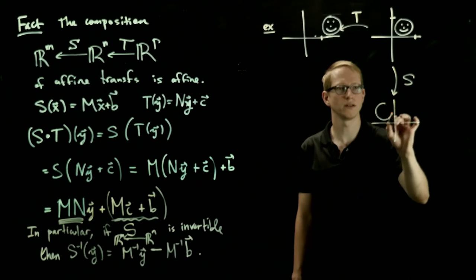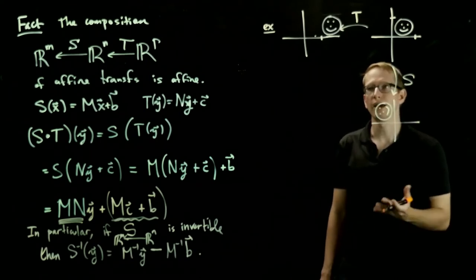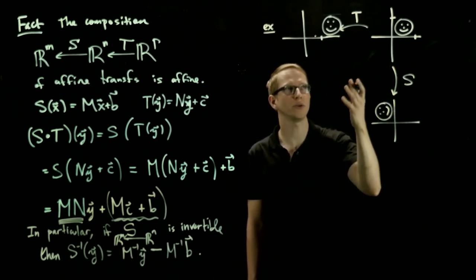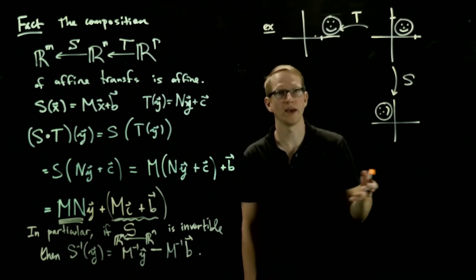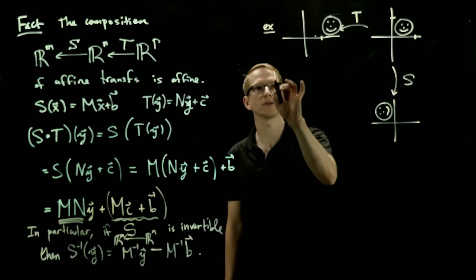So when we rotate, the face looks something like this. And then we can ask, what happens when we apply S and T in that order, or if we apply T then S? And what are the matrices and vectors associated to these transformations?